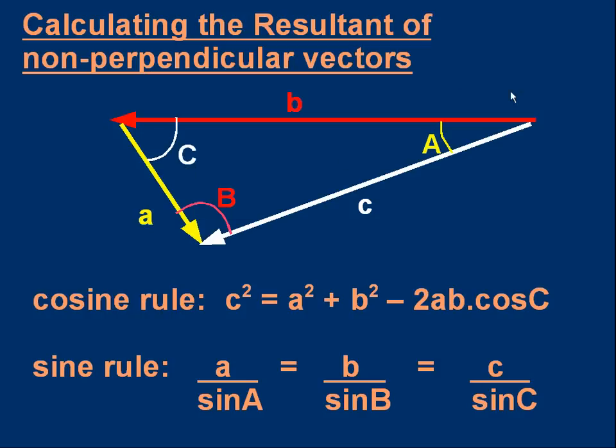And we want to work out the length of C and the direction of it. Well, if you are doing trigonometry, you probably know the cosine rule. C squared is A squared plus B squared, like Pythagoras, but minus 2AB cos C. So we can work out the length of the resultant.